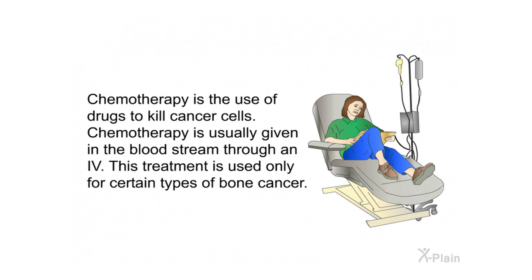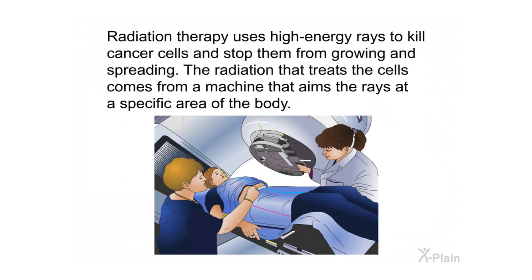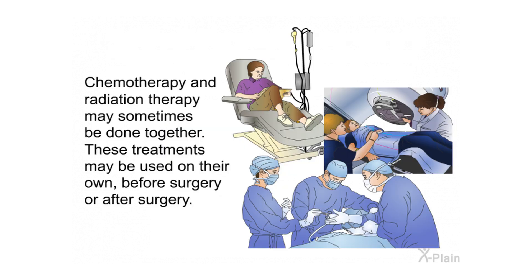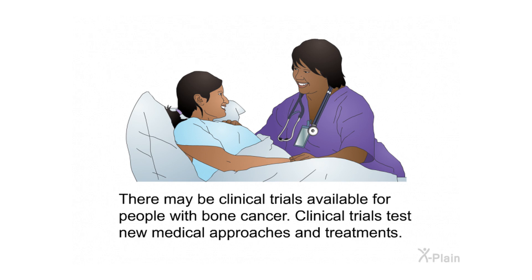Another type of surgery is cryosurgery — the use of liquid nitrogen to freeze and kill cancer cells. Chemotherapy is the use of drugs to kill cancer cells, usually given in the bloodstream through an IV, and is used only for certain types of bone cancer. Radiation therapy uses high-energy rays to kill cancer cells and stop them from growing and spreading. Chemotherapy and radiation therapy may sometimes be done together, and these treatments may be used on their own, before surgery, or after surgery. Clinical trials may also be available for people with bone cancer.